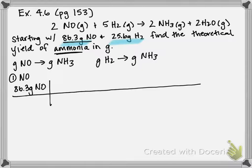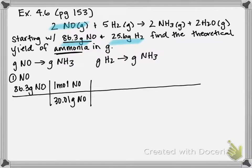Starting with 86.3 grams of NO, I'm going from grams of NO to grams of ammonia. First, I'll get from grams to moles using molar mass — dividing by the molar mass of NO, which is 30.01 grams per one mole of NO. Now that I'm in moles, I can look at the stoichiometry, the mole-to-mole ratio in the balanced equation. Comparing moles of NO to moles of NH3, I put two moles of NO on the bottom — from the balanced equation — and two moles of NH3 on top.